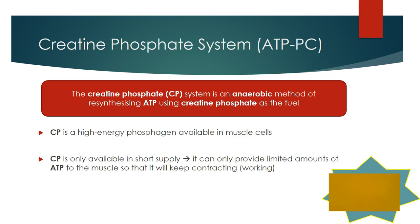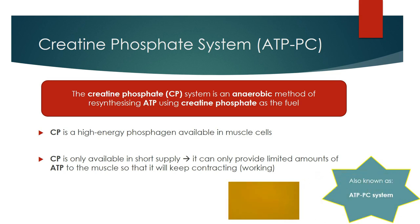Thus, it can only provide limited amounts of ATP to the muscles. Something to also mention is that the creatine phosphate system is also referred to as the ATP-PC system. As mentioned in the previous lecture, there are lots of nicknames for these energy systems, and that's another nickname for this one.